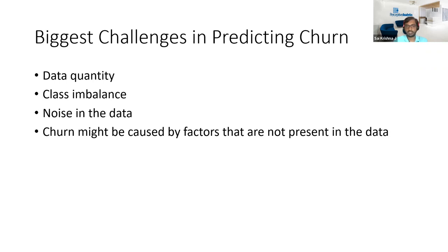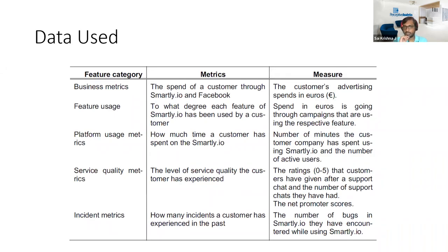Another important challenge is that churn may be caused by factors not present in the data. We discussed two types of churn — deliberate and incidental. Using customer behavior and status data, you can predict deliberate churn, but incidental churn caused by factors like budget cuts in the customer's company cannot be quantified or captured in the dataset. This is a significant challenge in predicting churn accurately.